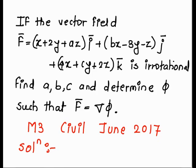If the vector field F bar equals (x + 2y + az) i bar plus (bx − 3y − z) j bar plus (4x + cy + 2z) k bar is irrotational, find a, b, c and determine phi such that F bar is equal to del phi.